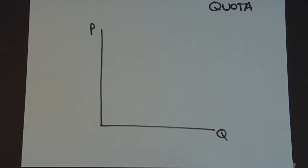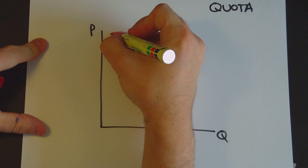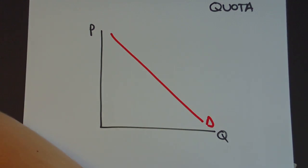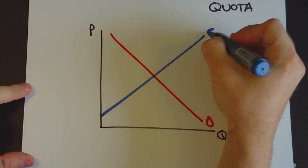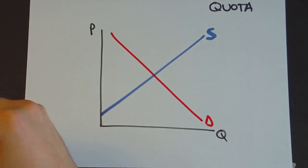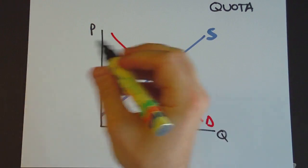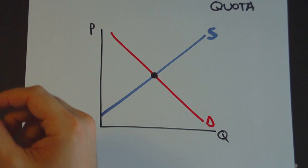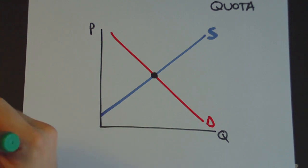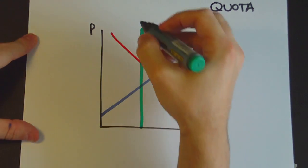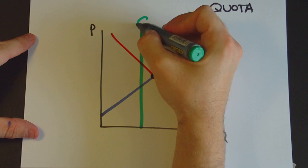Let's see what happens with our quota. We've got a downward sloping demand curve, upward sloping supply curve, and the market would normally operate at the equilibrium point here. Let's say that the government intervenes in the market and imposes a quota at this quantity here.